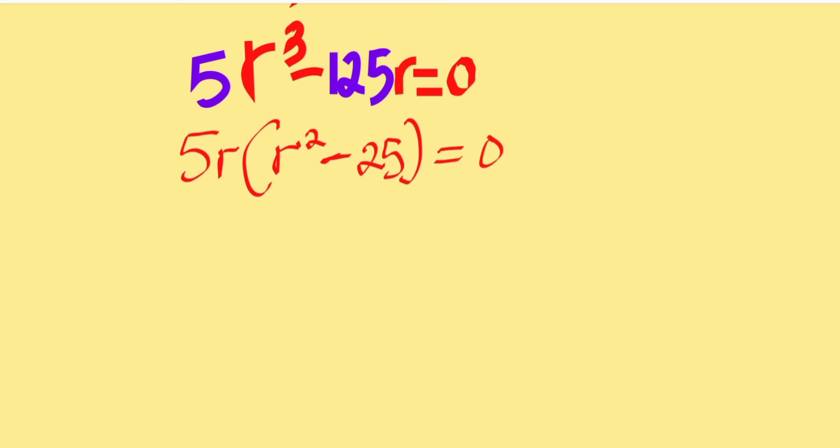When two things are multiplying each other to give you 0, you have to suspect that either one of the terms is 0 or both of them are 0. So either 5R is equal to 0, that means R is equal to 0 over 5, and 0 over 5 is 0.